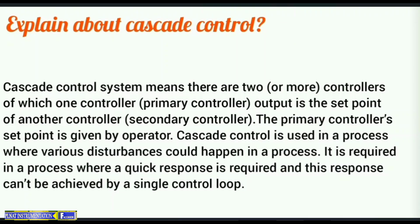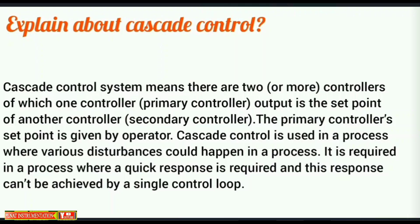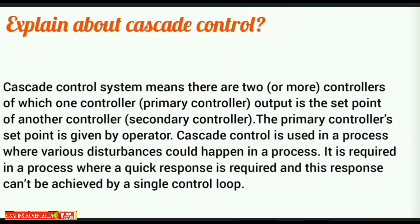Explain about Cascade control. Cascade control system means there are two or more controllers, of which one controller's (primary controller) output is the set point of another controller (secondary controller). The primary controller set point is given by the operator. Cascade control is used in processes where various disturbances could occur and a quick response is required that cannot be achieved by a single control loop.